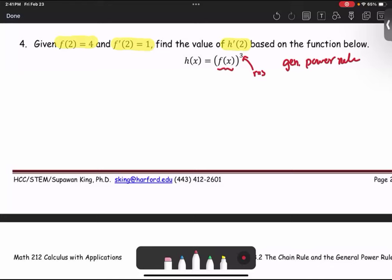So the general power rule, when you find the derivative of the function g(x) raised to the power r, the derivative is r times g(x) to the power r minus 1 and multiply by g prime. In this case, the g is the f, the function f.